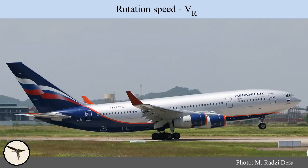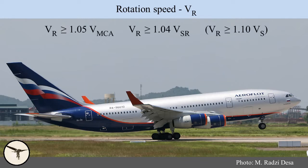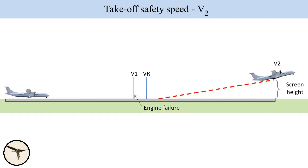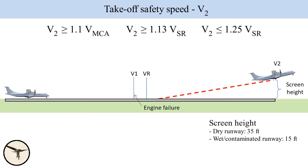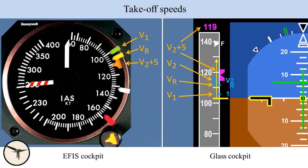VR — rotation speed. This is the speed where the pilot begins to command the nose up to become airborne. The nose should be rotated at 3 degrees per second up to 8 degrees pitch. VR must be at least 1.05 VMCA and 1.04 VSR. V2 — takeoff safety speed. In case of an engine failure at or after V1, the airplane must reach 35 feet at this speed. When the runway is wet or contaminated, the height is 15 feet — this is called the screen height. V2 must be at least 1.1 VMCA and 1.13 VSR, but not higher than 1.25 VSR. For takeoff, the target speed is set to V2 plus 5, which gives a better rate of climb. Here is how the speeds are shown on the airspeed indicators.